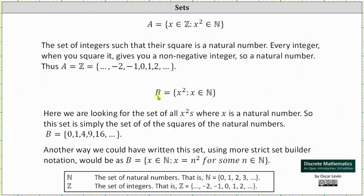Set B contains all the x² values such that x is a natural number. Here we're looking for the set of x² where x is a natural number. To find the elements in set B, we simply square the natural numbers. Therefore, set B contains the elements zero, one, four, nine, sixteen, and so on. These elements are found by squaring zero, one, two, three, and so on, which are the elements in the set of natural numbers.